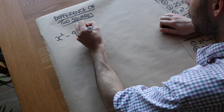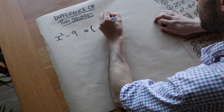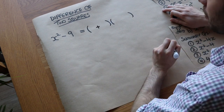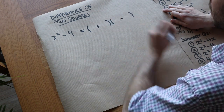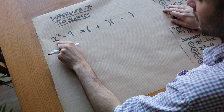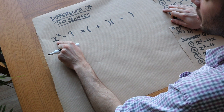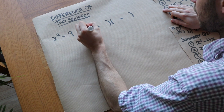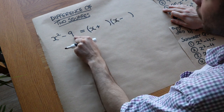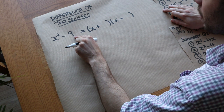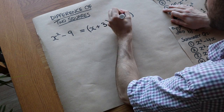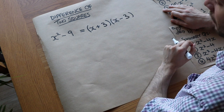The way we do it is to write two brackets. You put a plus in the middle of one bracket and a minus in the middle of the other. Then you ask: what is the square root of the first term? The square root of x squared is x, so we put x as the first term of each bracket. The square root of 9 is 3, so we put 3 as the second term. That is the complete factorisation.